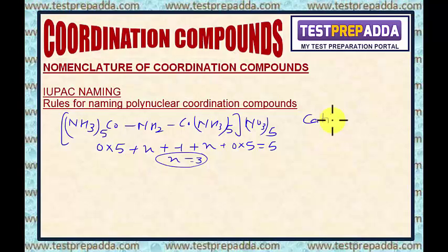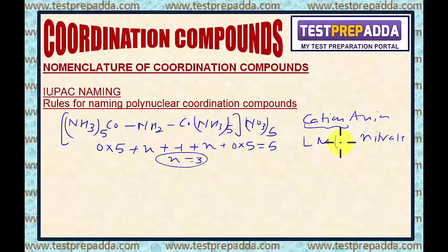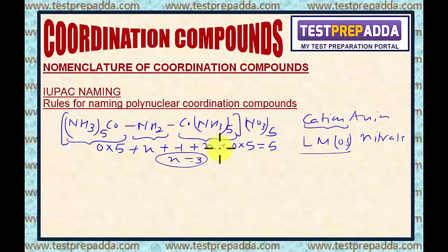To write the name of this polynuclear coordination compound, first write the name of the cation, then the name of the anion. The anion is a simple anion, so the name will be nitrate. The cation is the complex part. While writing the complex part, we write the ligands first, then the central metal, then the oxidation state in Roman numerals. We write the name of the first part — pentaamminecobalt(III) — then mu-amido, then the name of the second part — pentaamminecobalt(III) — and then simply nitrate.